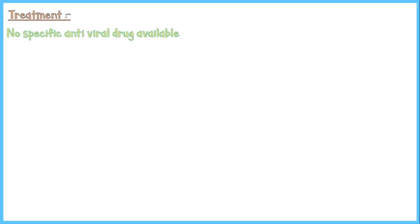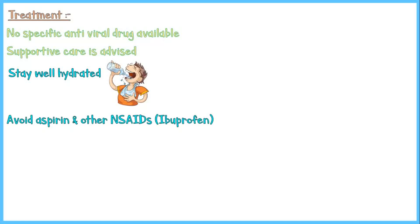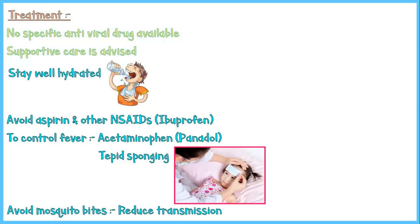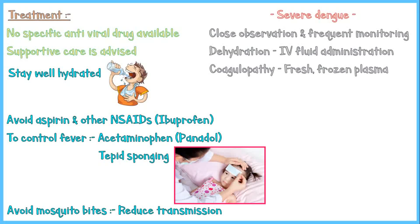There is no specific antiviral drug available to treat dengue. Supportive care is advised to reduce signs and symptoms. Patients are advised to stay well hydrated to prevent dehydration from vomiting and high fever. Aspirin and other NSAIDs like ibuprofen should not be used to reduce fever because of their anticoagulant properties. To control fever, acetaminophen and tepid sponging are indicated. Patients should avoid mosquito bites to prevent transmission. For severe dengue, close monitoring is required to prevent hypovolemic shock. IV fluid administration may be required for dehydration. For patients with coagulopathy, fresh frozen plasma is given. Prophylactic platelet infusion is not beneficial and can cause fluid overload.